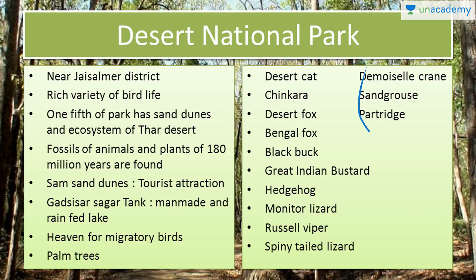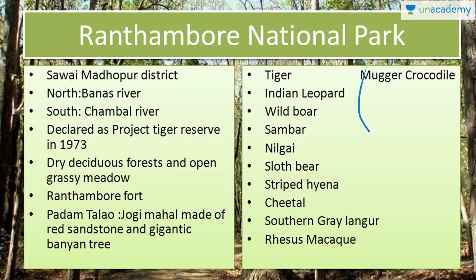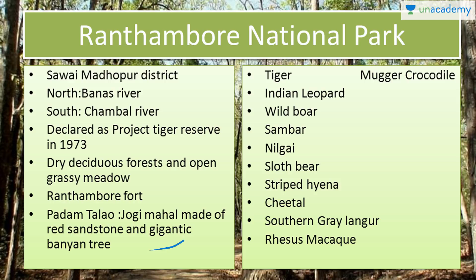Next we have Ranthambore National Park in Sawai Madhopur district of Rajasthan. The Banas river flows in its north and the Chambal river flows in its south. It was declared a Project Tiger reserve in 1973. You will find here dry deciduous forest and open grassy meadows. Ranthambore Fort is here, along with a lake known as Padam Tal. There is also Jogi Mahal, made of red sandstone, and a very gigantic banyan tree known to be the oldest banyan tree of India. Animal species include tiger, Indian leopard, wild boar, sambar, nilgai, sloth bear, striped hyena, cheetal, southern grey langur, rhesus macaque and mugger crocodile.